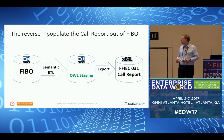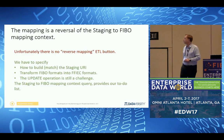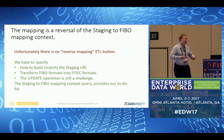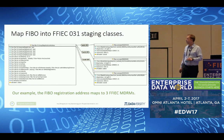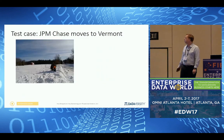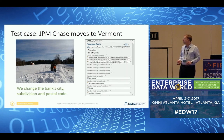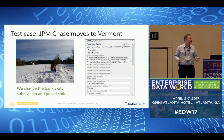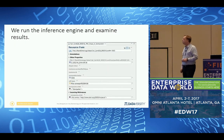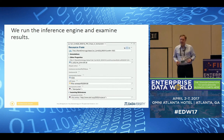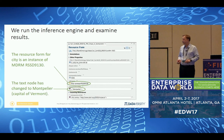Now the reverse, same way: I take FIBO, do a semantic ETL into staging, and export a modified call report. There is no automatic reverse mapping — we have to do the work in the opposite direction. Here is a FIBO registration address that populates three call report items: zip code, state, and city. Our test case is JPMorgan Chase moves its headquarters to Vermont. In the target FIBO instance I overwrote the city name. Running the inference engine and looking at the result, I see RSSD 9130 — the city item — has changed to Montpelier.